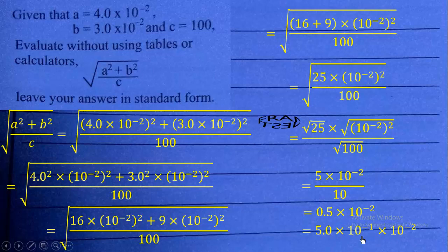So, we now simplify this by adding the exponent. See, the bases are the same. So, that will give us 5.0 times 10 exponent negative 3. Therefore, the result of this is 5.0 times 10 exponent negative 3 in standard form.